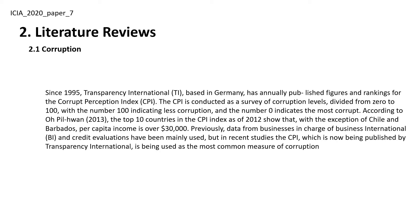Literature Review 2.1: Corruption. Since 1995, Transparency International (TI), based in Germany, has annually published figures and rankings for the Corruption Perception Index (CPI). The CPI is conducted as a survey of corruption levels, divided from 0 to 100, with 100 indicating less corruption and 0 indicating the most corrupt.